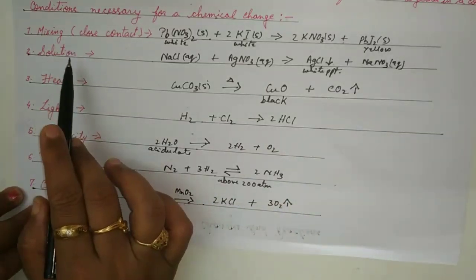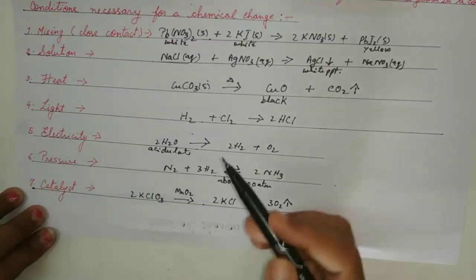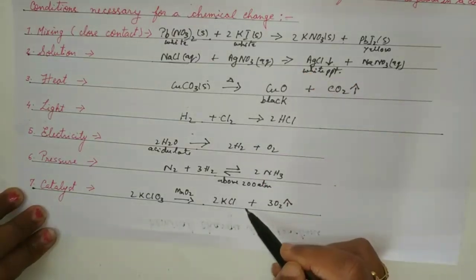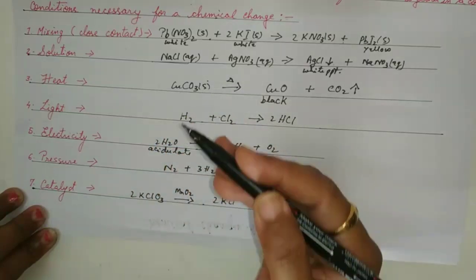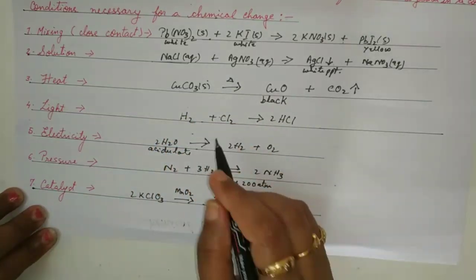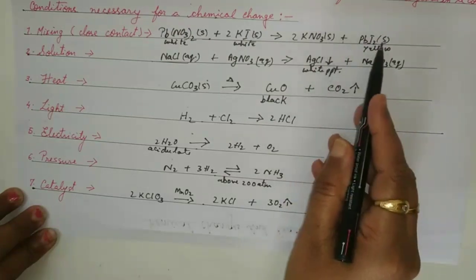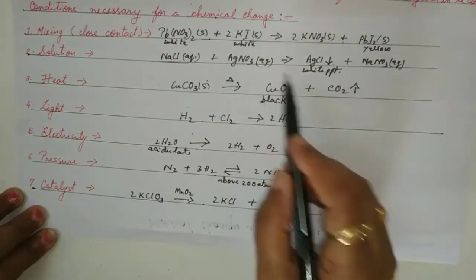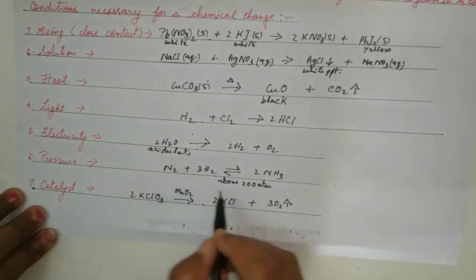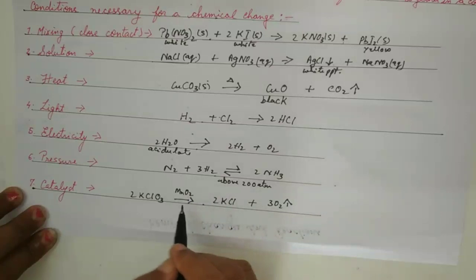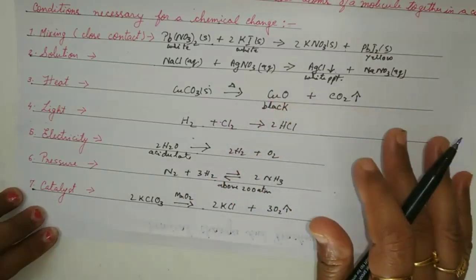So these are the conditions: close contact, solution, heat, light, electricity, pressure, and catalyst. These are some example equations — they are not all that is in your text, so please go through your text and practice writing the equations. Important points to note: write 'solid' or 'aqueous' where needed, put the sign of precipitate, mention the color of compounds, the sign of gas, the conditions required, temperature, and the name of the catalyst.